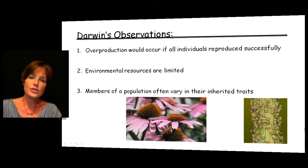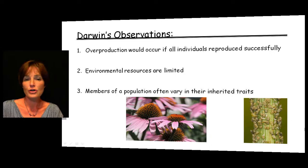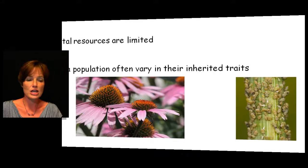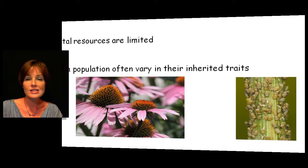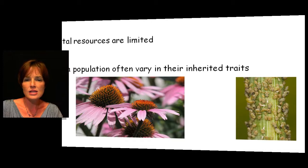His third observation was that the members of a population vary a lot in their inherited traits. The first picture shown is coneflowers — a wildflower — and although at first glance they may all look very similar, there are many unique differences if you look closely. Insects crawling on a plant also look the same until you look up close. Ladybugs are the same way — their spots are all in different locations. There is a lot of variety in these different populations if we take the time to really look closely.